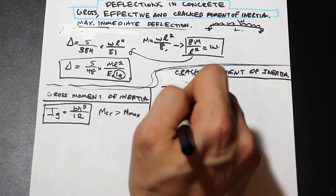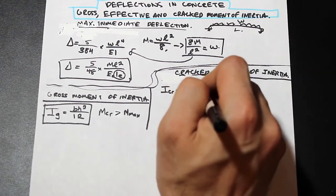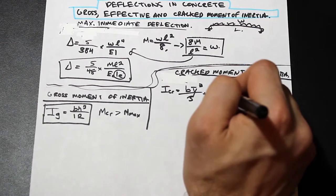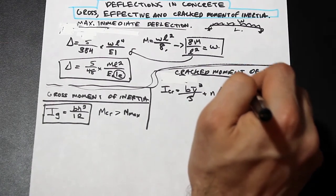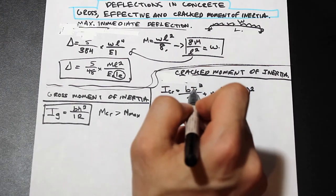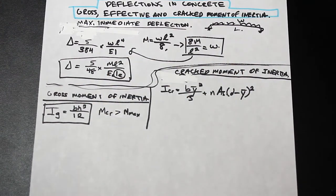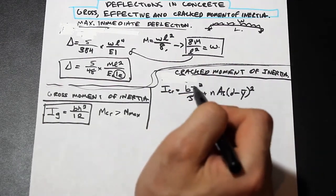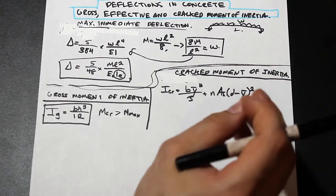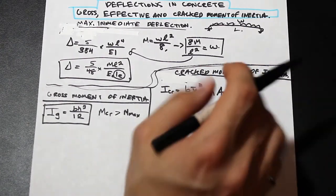Now let's look at the cracked moment of inertia Icr. The derivation is a bit long — check your textbook for that. This derivation is for beams with tension steel only; if we have compression steel, one more term needs to be added. The formula uses the parallel axis theorem. The variable y-bar is the centroid of the transformed section, and b is the base. We need to transform the section using the modular ratio, converting the steel to an equivalent amount of concrete.